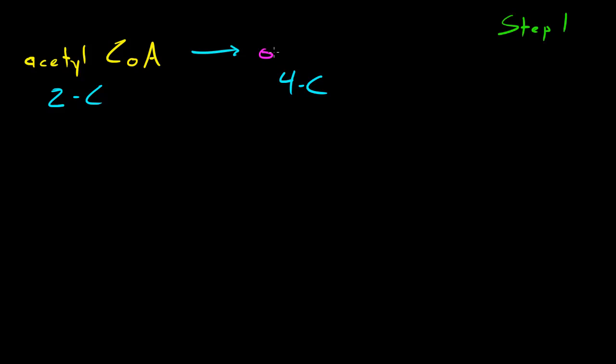The four-carbon molecule is called oxaloacetate. Of course, whenever we have a two-carbon molecule and it combines with a four-carbon molecule, we end up with a six-carbon molecule. This new and improved six-carbon molecule is actually called citrate or citric acid.